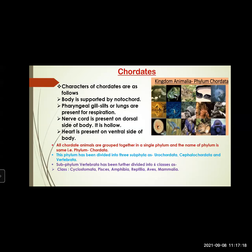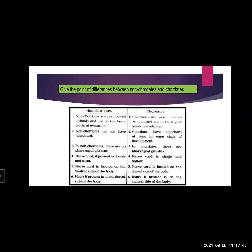Further, out of these three subphylums — Urochordata, Cephalochordata, and Vertebrata — the subphylum Vertebrata is divided into six classes: Cyclostomata, Pisces, Amphibia, Reptilia, Aves, and Mammalia. Now let us see the differences between non-chordates and chordates, and then we will go to the concept map of kingdom Animalia.